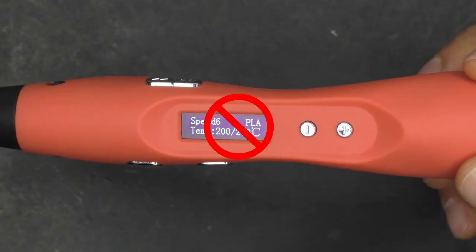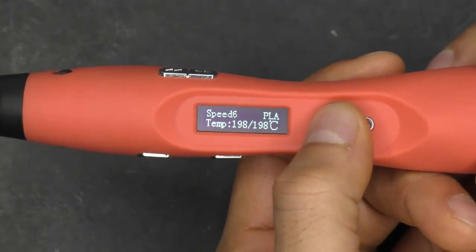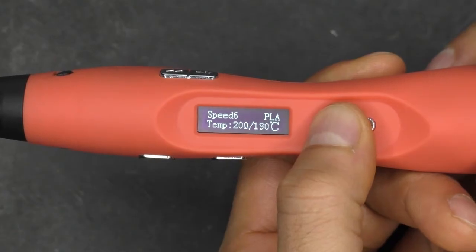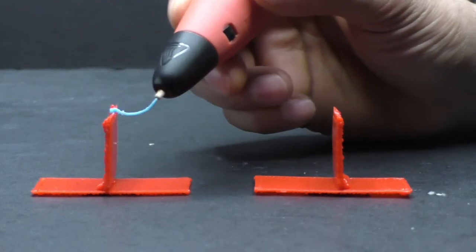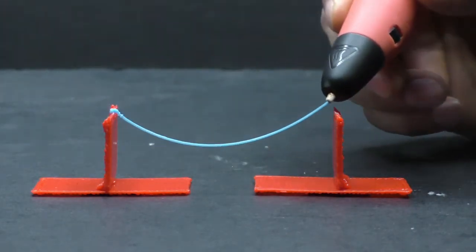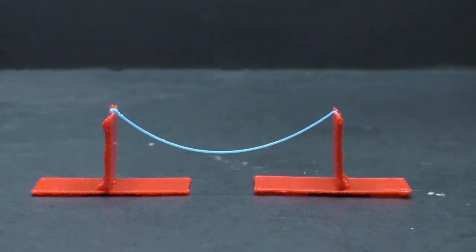Keep in mind that if you have the wrong temperature settings, it can really mess things up. If the temperature is too hot, the plastic will become super stretchy and difficult to control. Here the temperature is set way too high and you can see that at a normal bridging hand speed, the filament stretches a lot more.